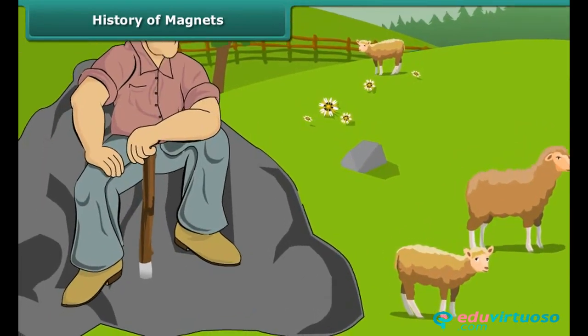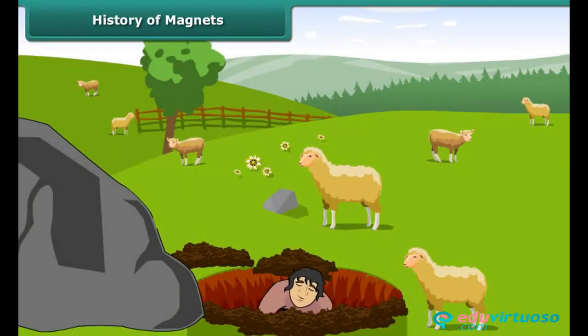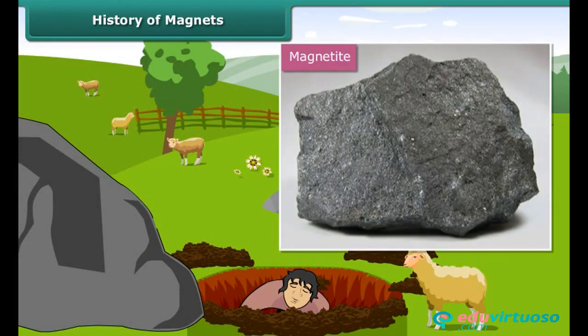Suddenly, the metal tip of his stick became firmly stuck to a large black rock on which he was sitting. To find the source of attraction, he dug up the earth to find magnetite, a natural magnetic material.